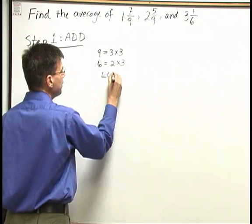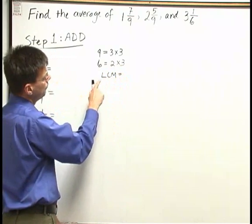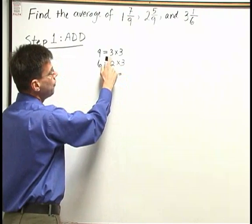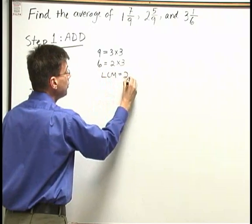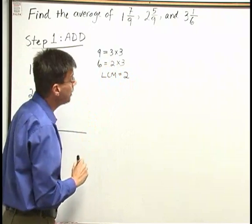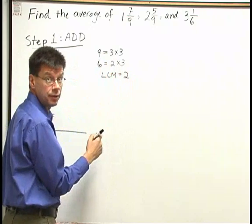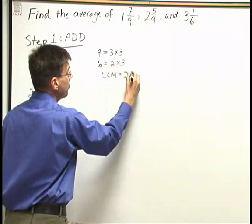And now I'm ready to put together the factors of my LCM. First let's think about the twos. There are no factors of two in the nine, one in the six, so I need a factor of two. Nine has two factors of three, six has just one factor of three. The most threes that I see is in the nine, so I need those two.